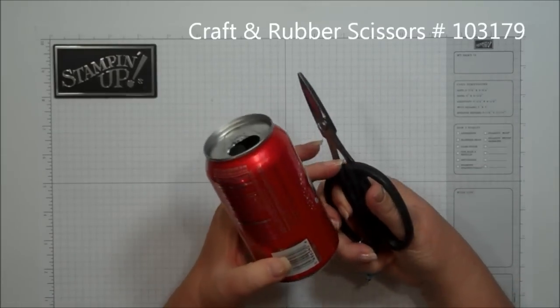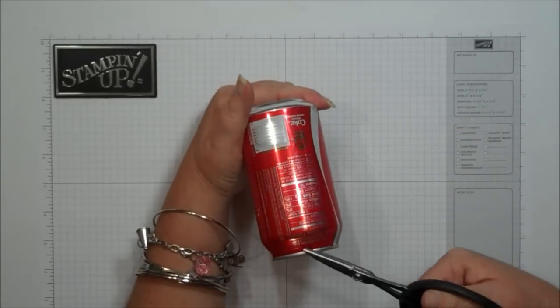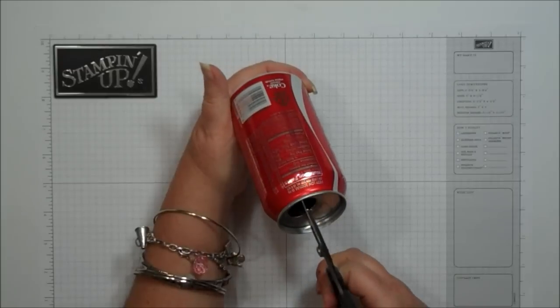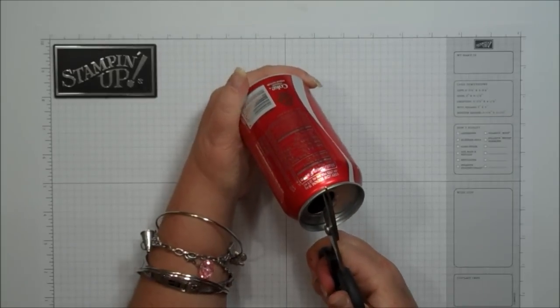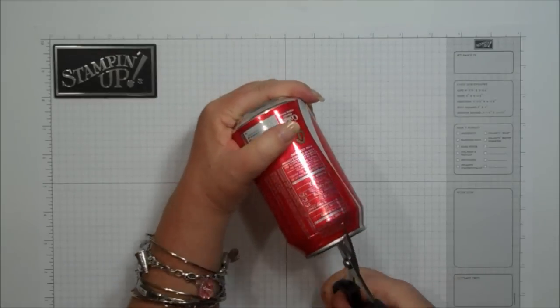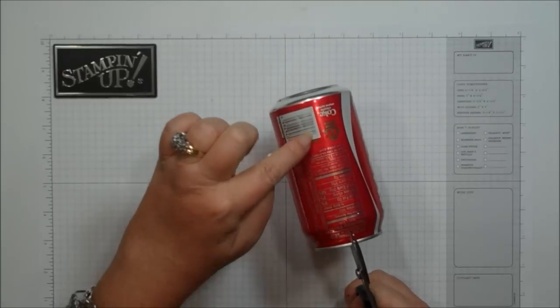So what you're going to do is take your craft and rubber scissors and make your first cut along the side where it says all the ingredients to your soda. The first cut is going to be the hardest. Once you get your first cut, just cut down to the edge.